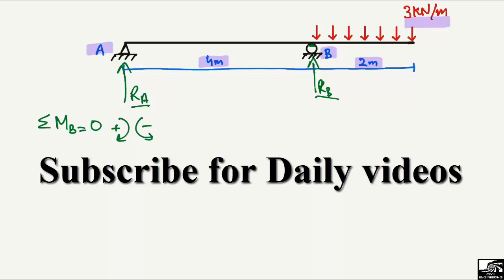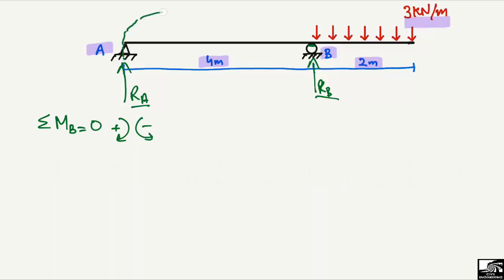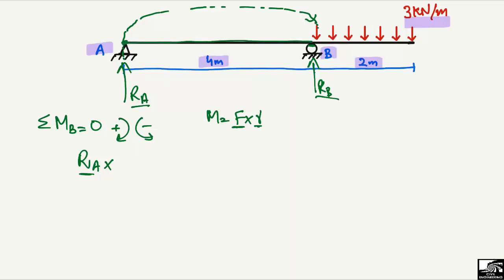All forces creating a moment about point B will now be considered. RA is the first reaction and it creates a clockwise moment about point B, so it is taken as positive. Moment equals force multiplied by the perpendicular distance, so RA multiplied by 4 meters, which is the distance from A to B.